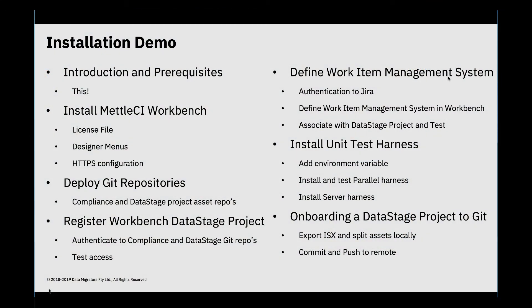Then I'm going to install the Metal CI workbench, deploy Git repositories, link the workbench to those Git repositories, test that we can do a commit and also run compliance. We're going to define a work item management system, install the unit test harness, and then ultimately onboard an entire Data Stage project into Git — getting you to the point that is really the starting point of the demo video, which I'm hoping you've already seen as a prerequisite. If you haven't seen a demonstration of Metal CI, I would urge you to do so, so that you understand what Metal CI is, what role it plays, how you access its various functions and what those functions are.